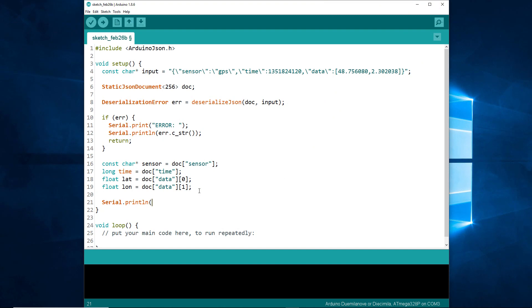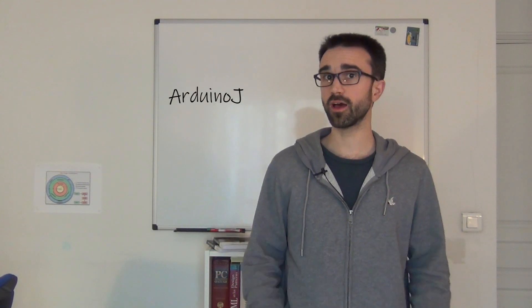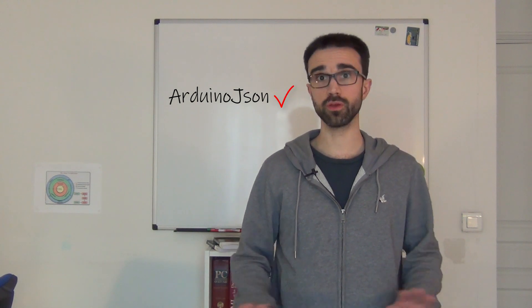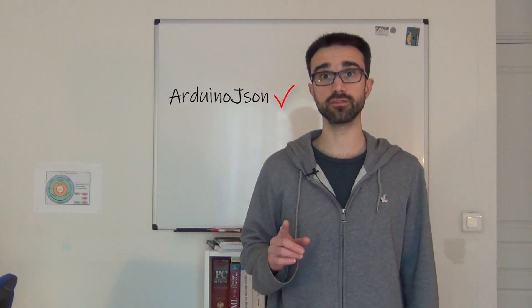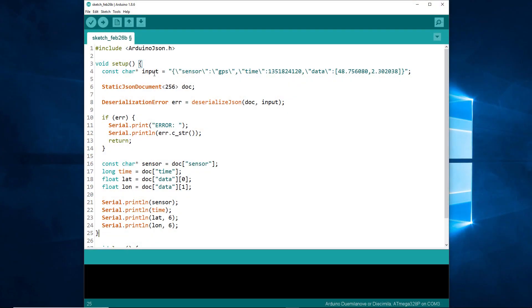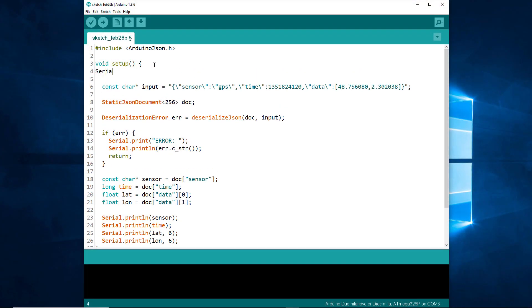Finally, we can print the values on the serial port. Our program is almost complete. As far as Arduino JSON is concerned, we're good. But we forgot to initialize the serial port. Go back to the top of the setup function. Add serial.begin and set the baud rate. Now, our program is complete.